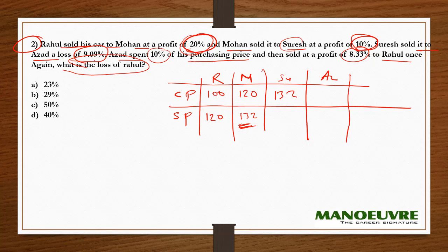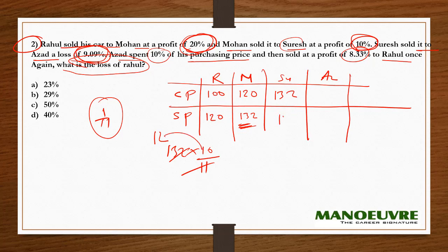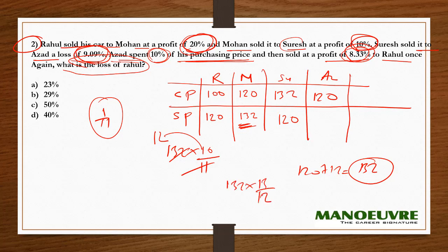Suresh sold it to Azad at a loss of 9.09 percent, which in fraction is 1/11. So the selling price is 132 × 10/11. The 12 cancels, giving 120. So Rs. 120 is the selling price for Suresh and the cost price for Azad. Azad spent 10 percent of his purchasing price (10 percent of 120 = 12), making his total cost Rs. 132. He then sold at a profit of 8.33 percent, which in fraction is 1/12, so the multiplier is 13/12.